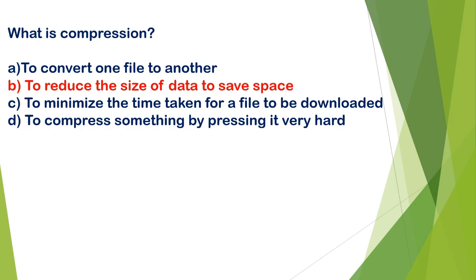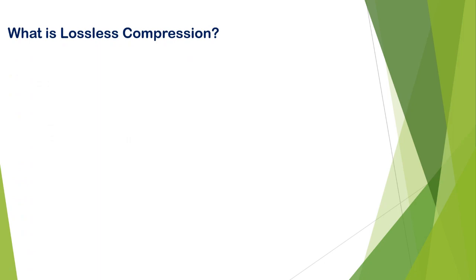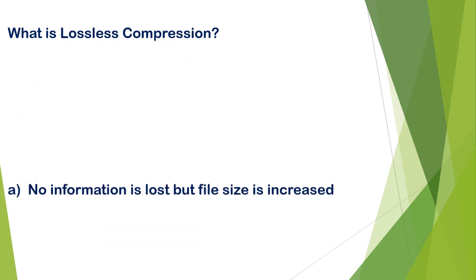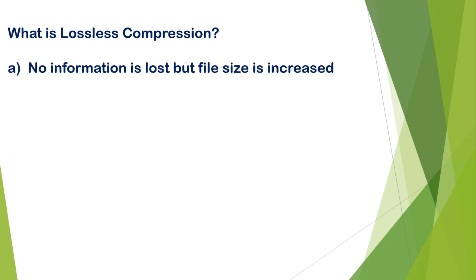What is compression? A) option to convert one file to another, B) option to reduce the size of data to save space, C) to minimize the time taken for a file to be deleted or downloaded, D) to compress something by pressing it very hard. The correct option is B, option to reduce the size of data to save space.